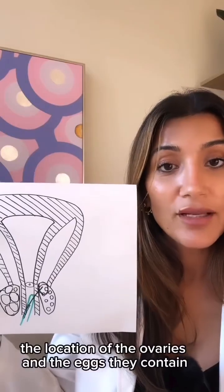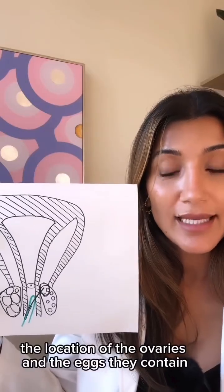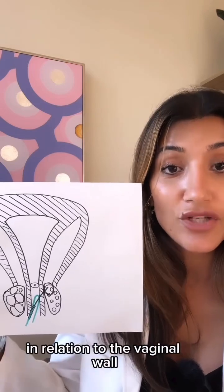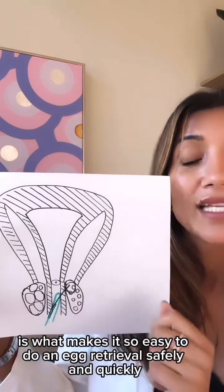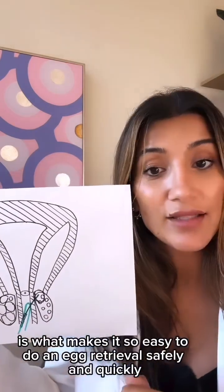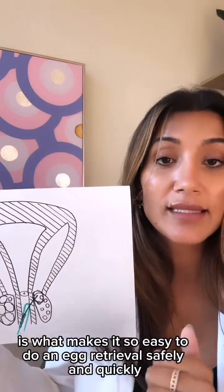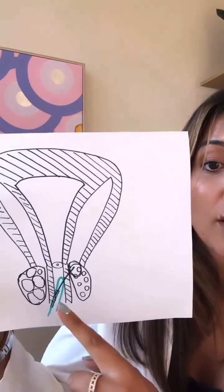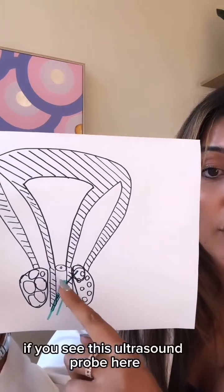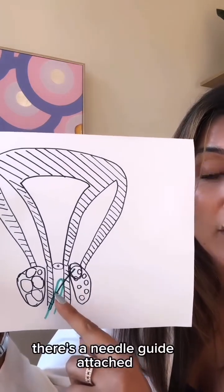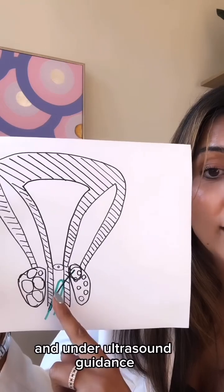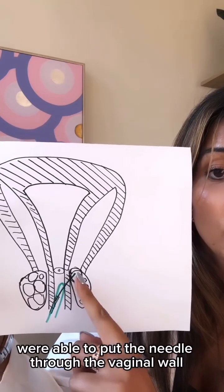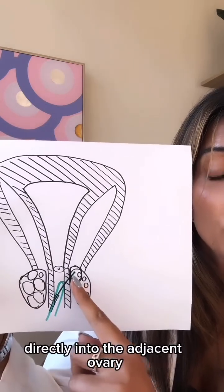The location of the ovaries and the eggs they contain in relation to the vaginal wall is what makes it so easy to do an egg retrieval safely and quickly. If you see this ultrasound probe here, there's a needle guide attached. And under ultrasound guidance, we're able to put the needle through the vaginal wall directly into the adjacent ovary.